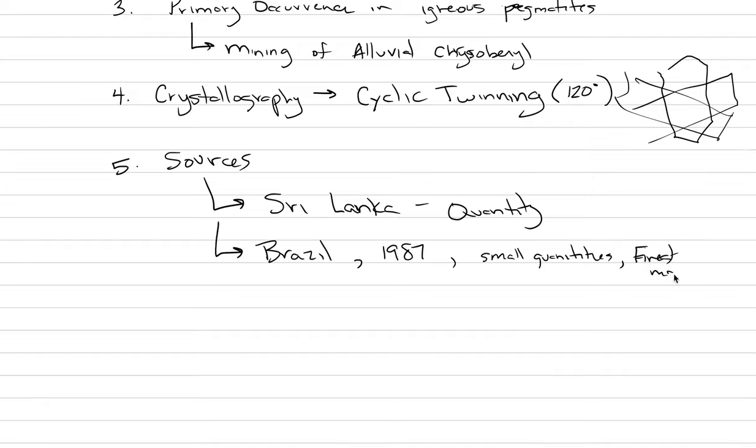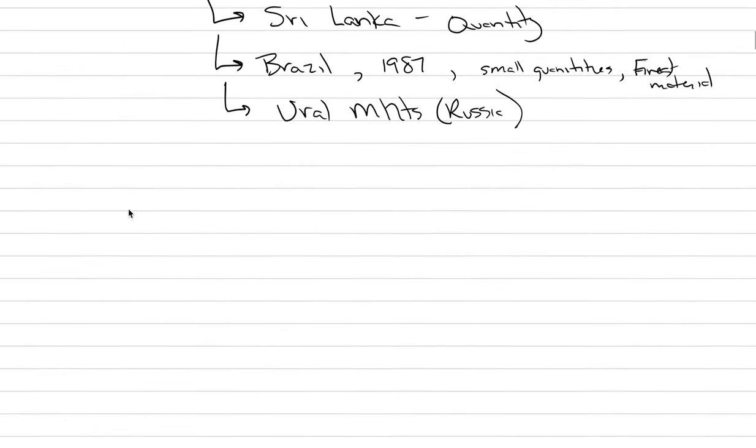The initial discovery was in the Ural mountains, and there's a chance that that opens up again. So let's just put Ural mountains, and I'm assuming you know where the Ural mountains are - that's in Russia. And if that opens up again, then there could be very fine alexandrite coming from Russia as well.